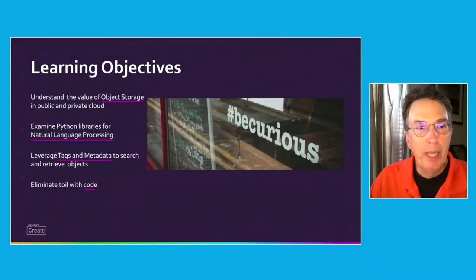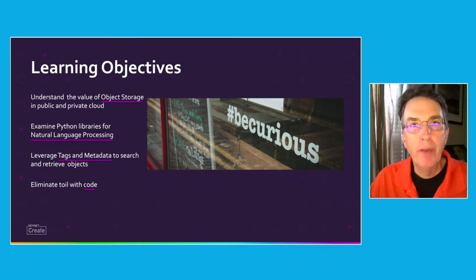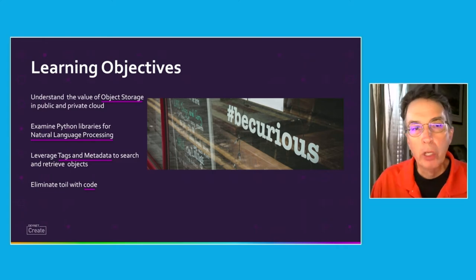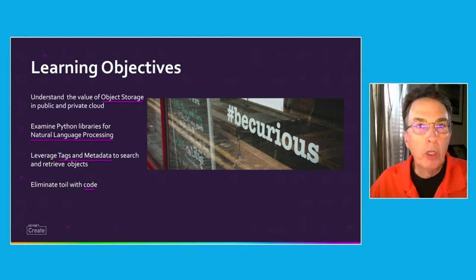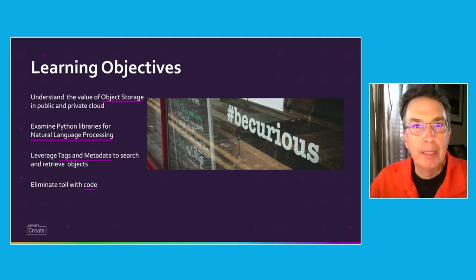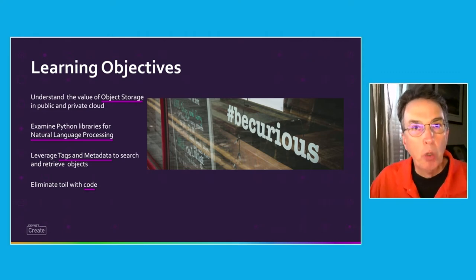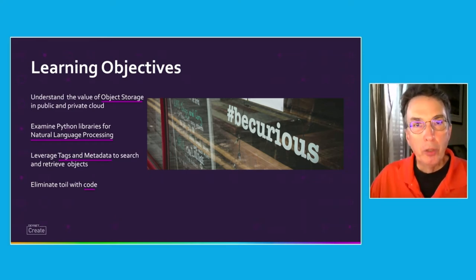Our objective today is to understand a solution to address this problem. We want to look at the value of object storage and how object storage in either a public or private cloud environment can help us. And then we're going to look at an AI or machine learning concept called natural language processing, and how that ties into identifying the relevancy of these presentations. We'll leverage tags and metadata to search and retrieve objects, and use code to eliminate some toil in our day-to-day activities.